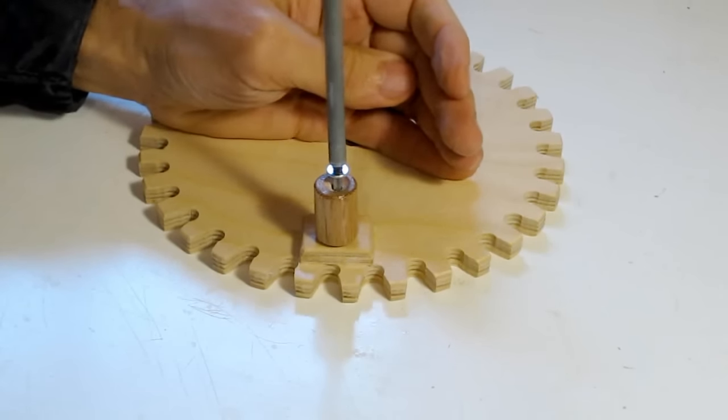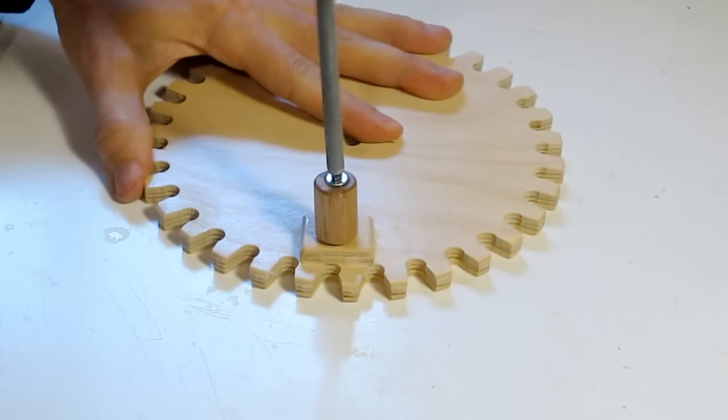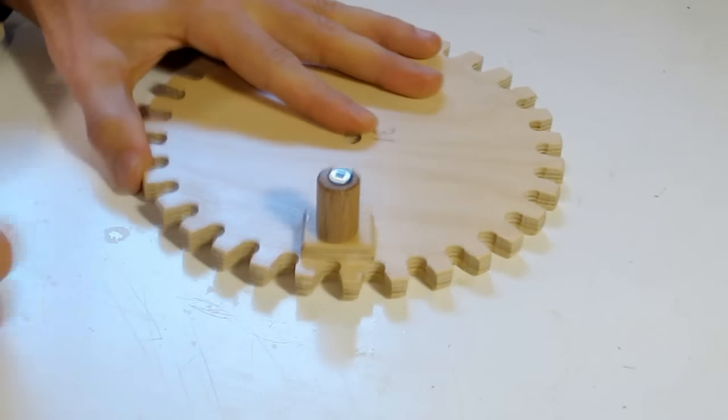And now to mount the knob on the gear. I put the screw all the way in then back it out a little bit just to make sure that the knob has a little bit of play. And I also want to make sure that it doesn't stick out the back.